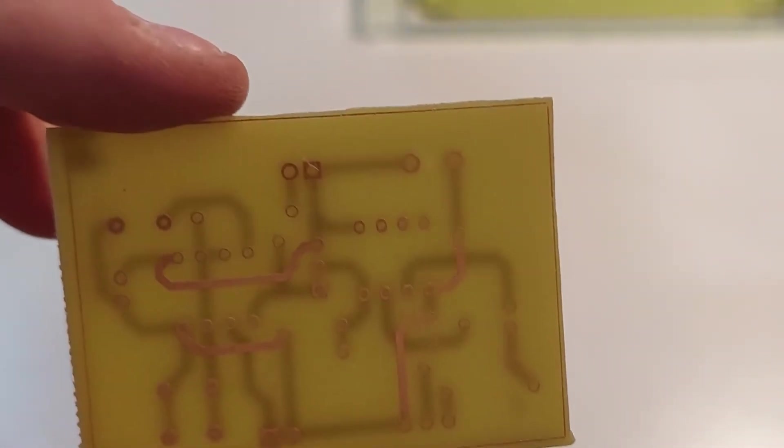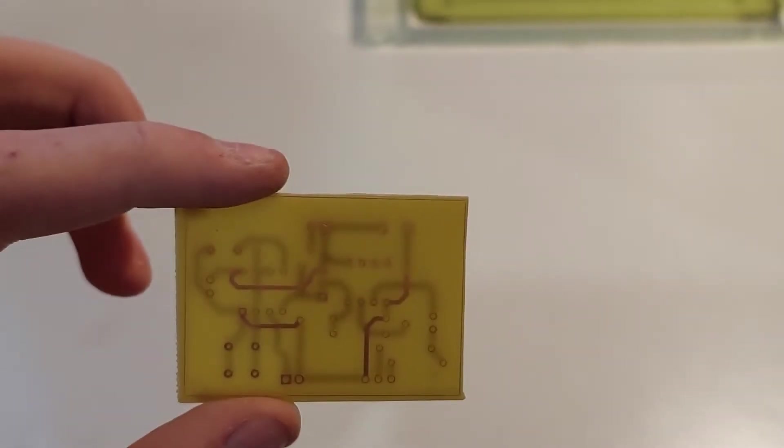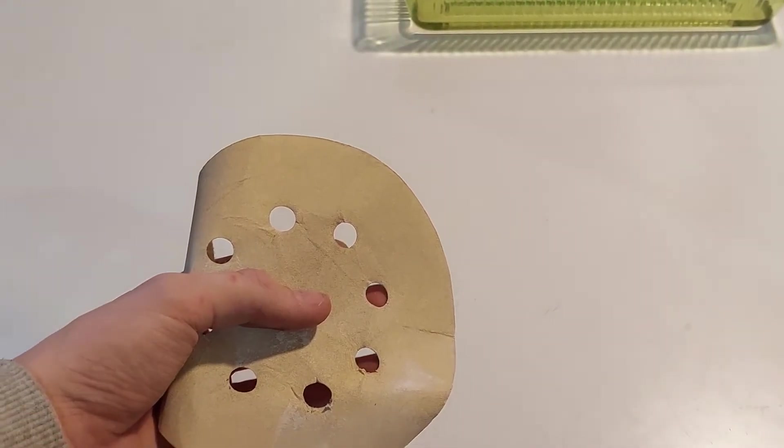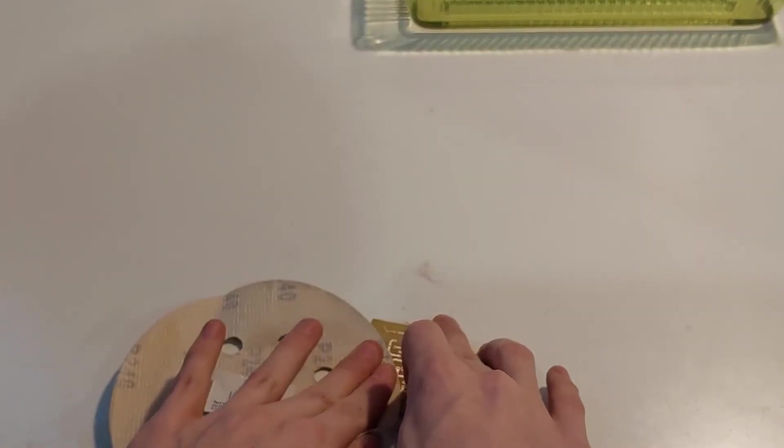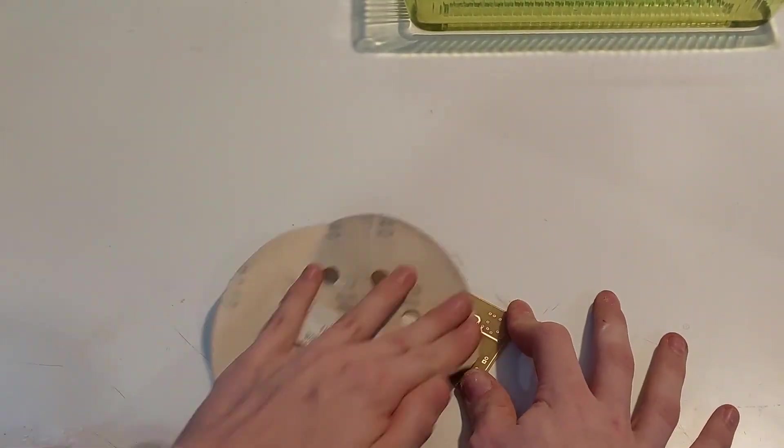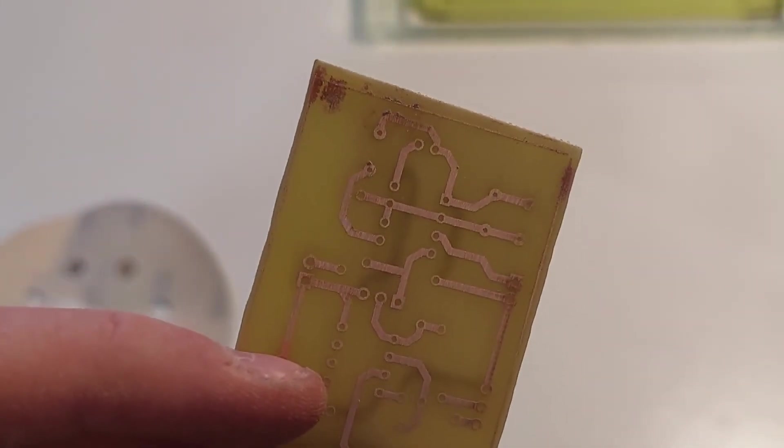So now we just have to clean off the photoresist off of these traces. And then we can drill out the holes and use it. To clean up the photoresist you can either use some acetone and scrub it or just use some very fine sandpaper and take off a thin layer as I demonstrate. So here I have very fine sandpaper like 240 grit so I just sand it. And when sanding, sand it lightly so you don't remove too much copper. And here we go. The copper traces are now shiny, nice and shiny and ready to be drilled and soldered. So there we go. Now you know how to make very nice double sided PCBs at home in a pretty simple way. See you in my next video.